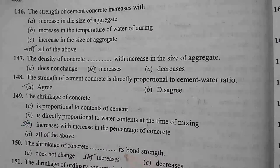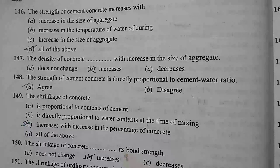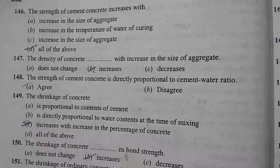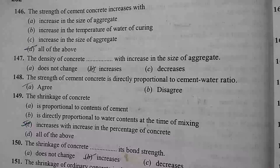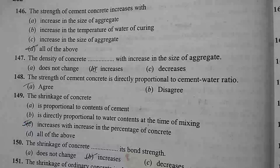The strength of cement concrete increases with increase in the size of aggregate and increase in the temperature of curing. The density of concrete increases with increase in the size of aggregate. The strength of cement concrete is directly proportional to the cement-water ratio.